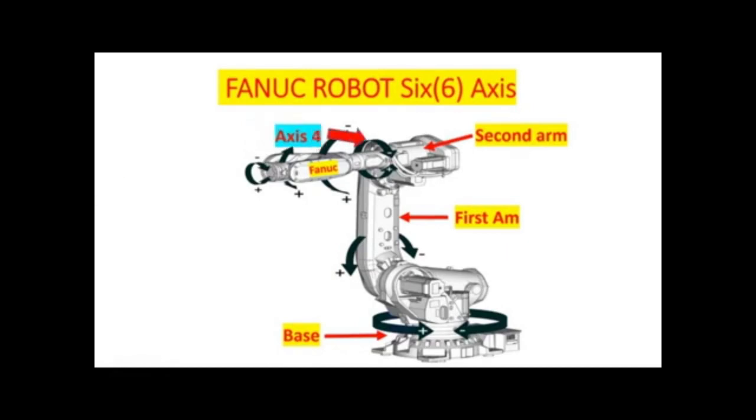Axis number four is also known as wrist. It rotates the upper arm in circular motion clockwise and counterclockwise. Axis number five allows the rest of the robot arm to tilt up and down.